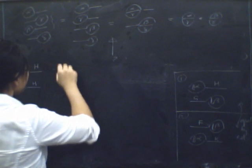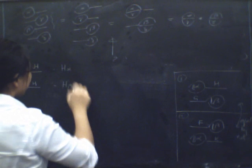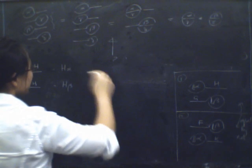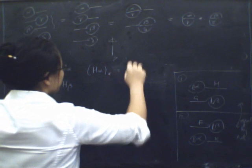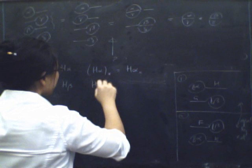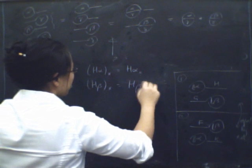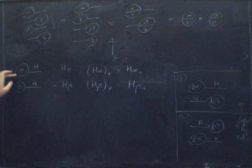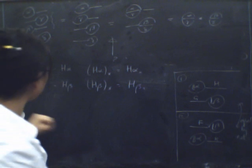and this is the natural transformation H beta. And the components of H alpha are just H of alpha of X, and the components of H beta are just H of beta of X. And so what we're going to do now is we're going to do vertical composition of these two natural transformations.